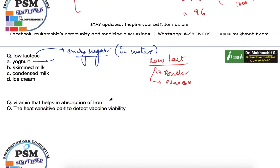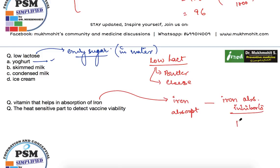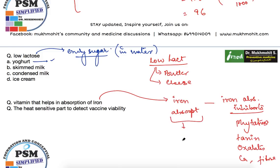Regarding the vitamin that helps in iron absorption: there are iron absorption promoters and inhibitors. Inhibitors include phytates, tannin, oxalates, calcium, and fiber. Iron absorption is promoted by Vitamin C — ascorbic acid is a potent iron absorber.